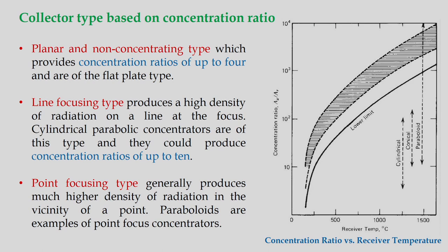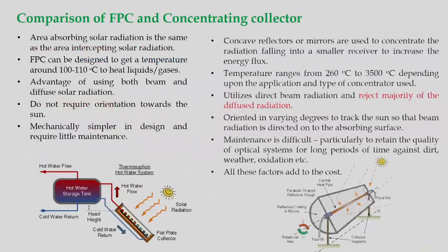Planar and non-concentrating types provide concentration ratios up to 4 and are of flat plate type. A graph with concentration ratio on the vertical axis and receiver temperature on the horizontal axis shows ranges of operation for different collector types. The paraboloid, conical, and cylindrical configurations each have specific operating ranges. For line focus systems, concentration ratio can reach up to 10, while for point focus systems it is very, very high.